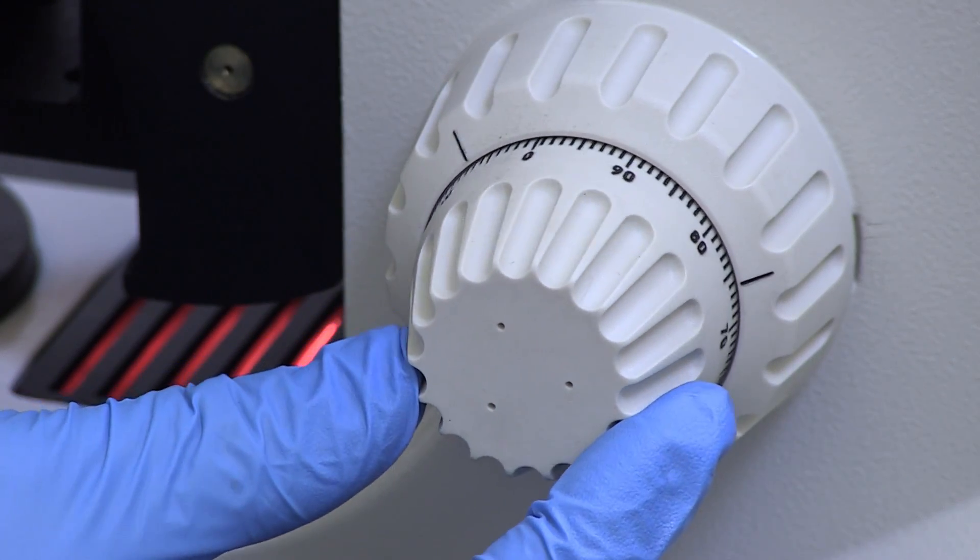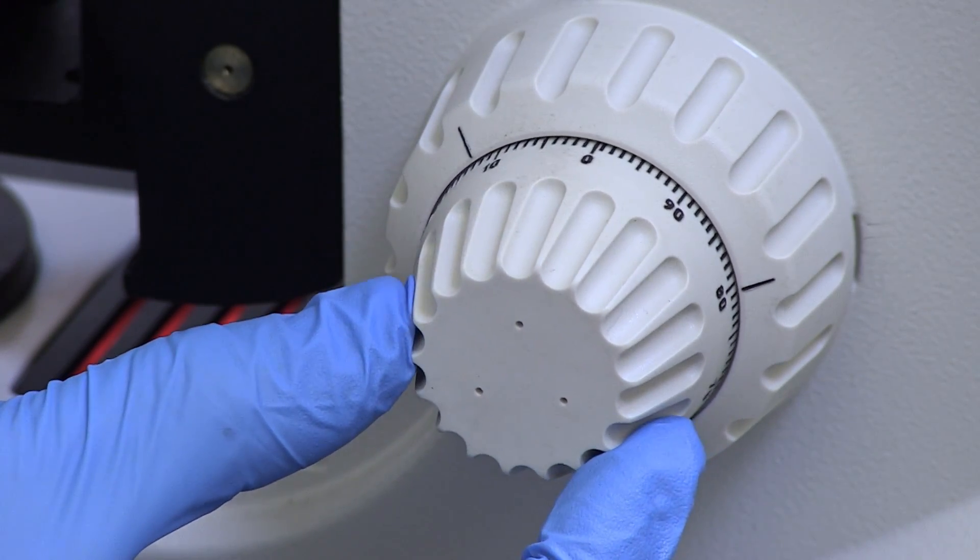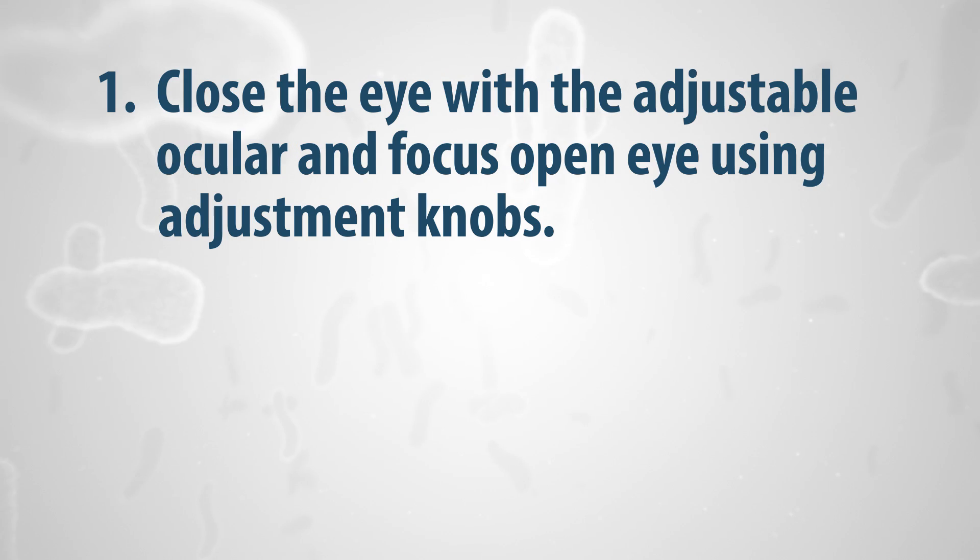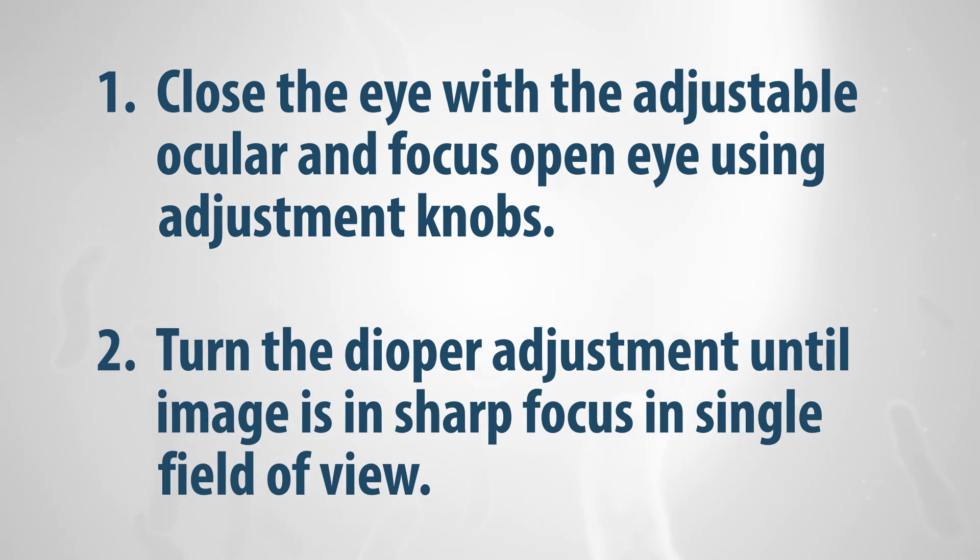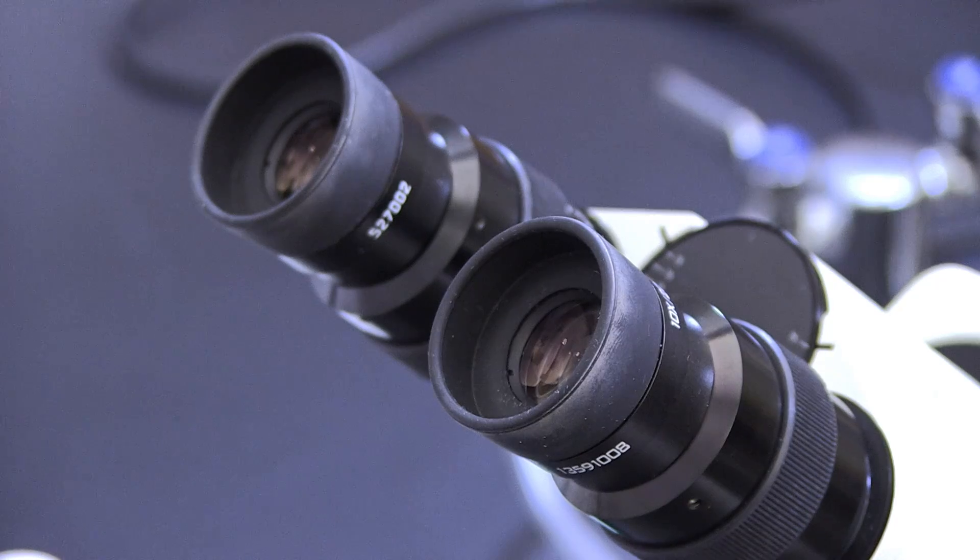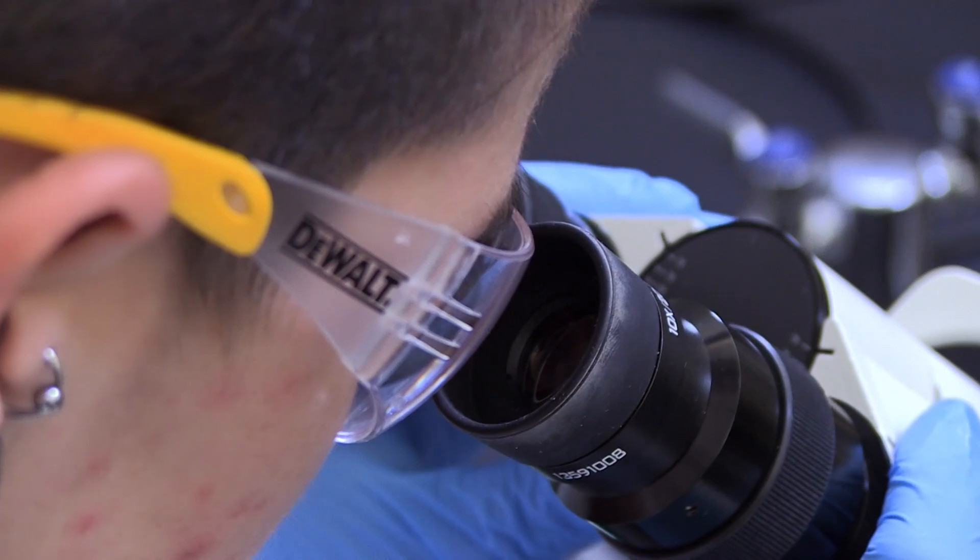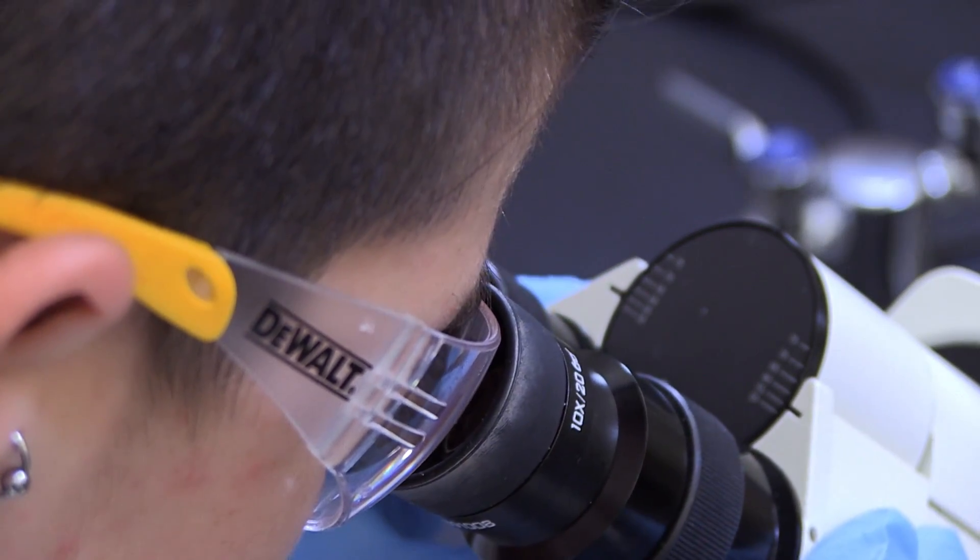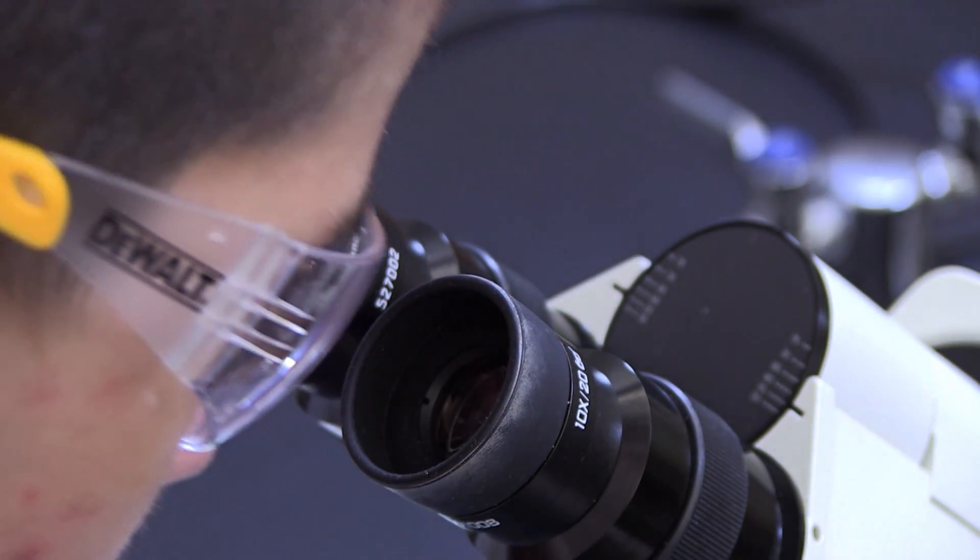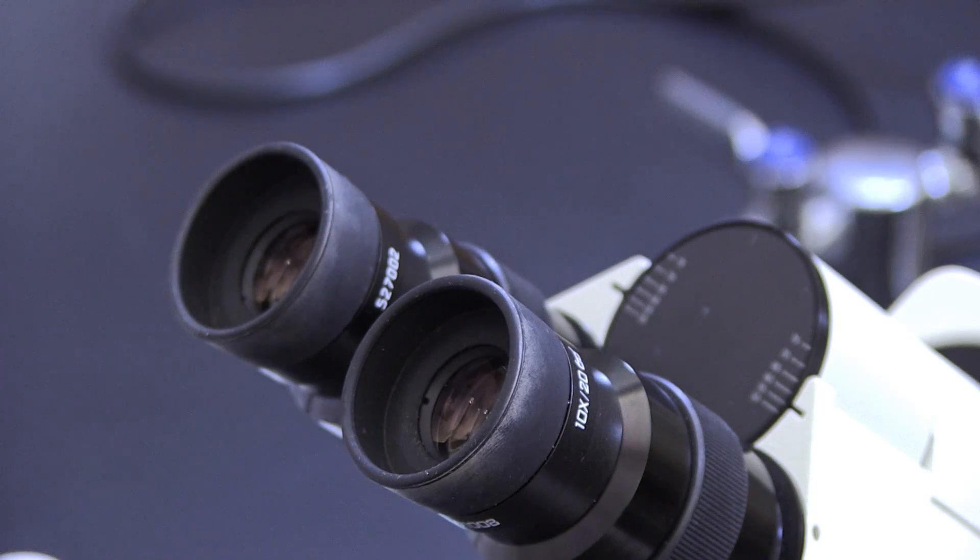Use the diopter adjustment to compensate for differences in visual acuity between your eyes as follows. First, close the eye with the adjustable ocular and focus your open eye using the coarse and fine adjustment knobs. Second, using only the eye with the adjustable ocular, turn the diopter adjustment until the image is in sharp focus in one single field of view. Look through both oculars and slowly adjust the difference between them so that the interpupillary distance matches the distance between your eyes and a single image is shown.